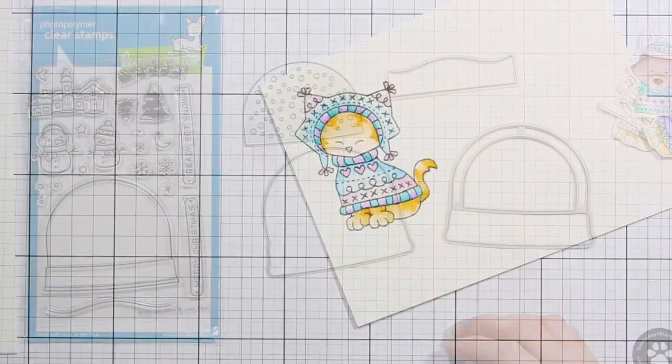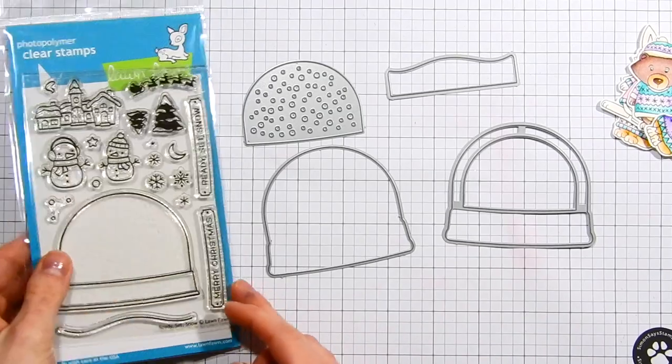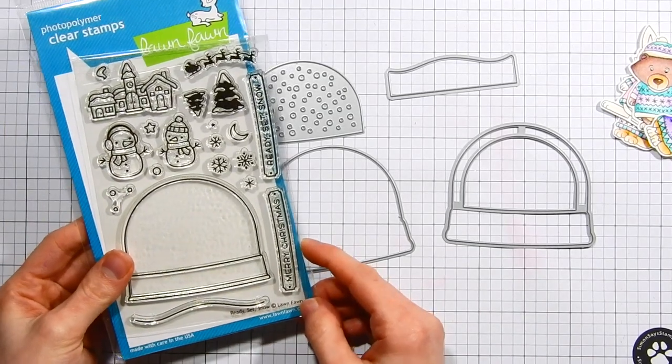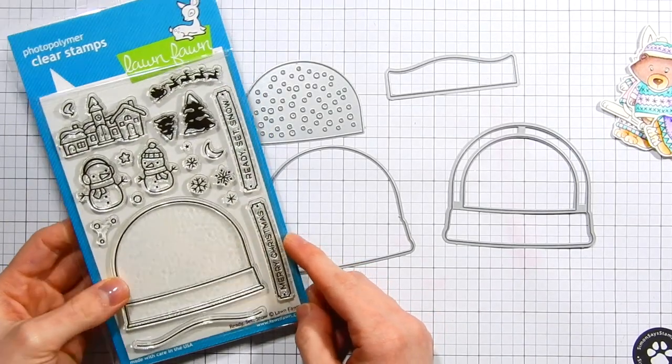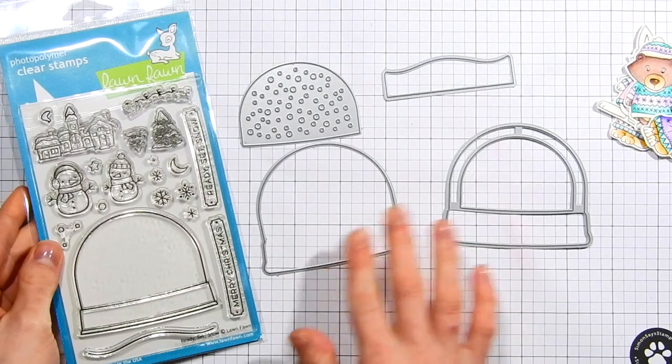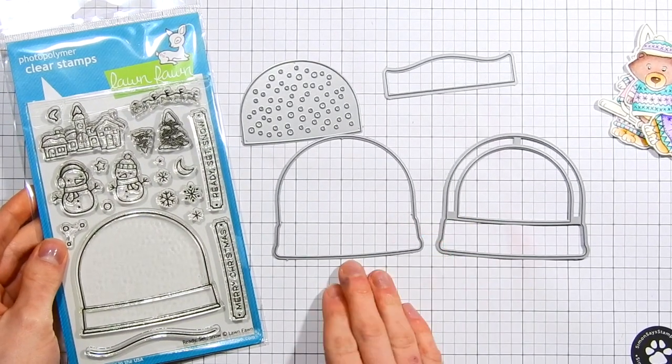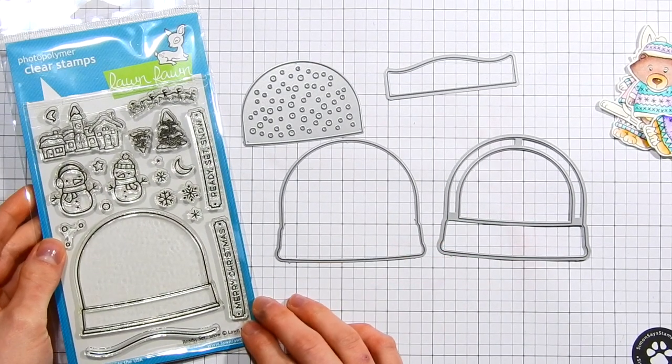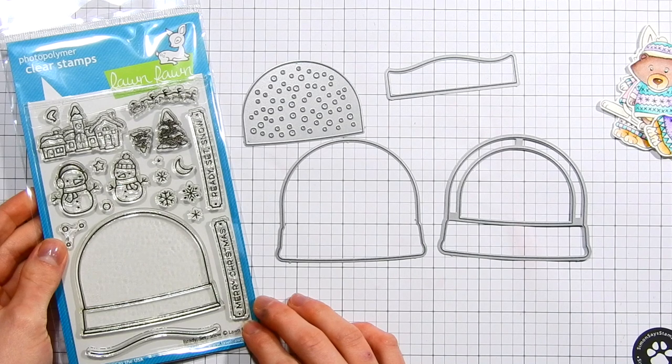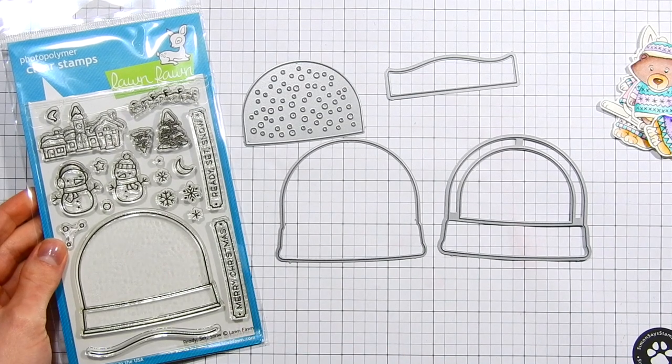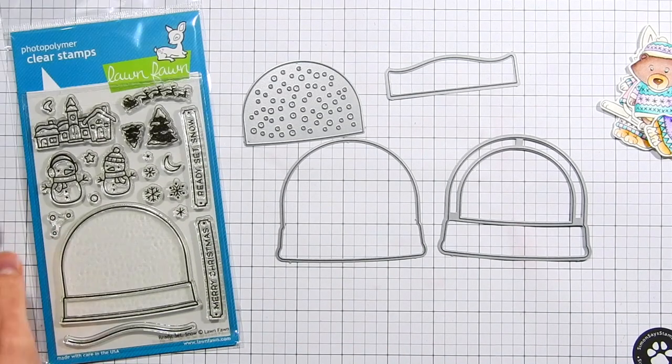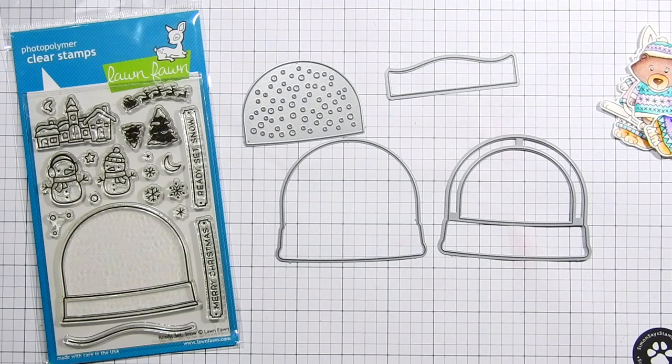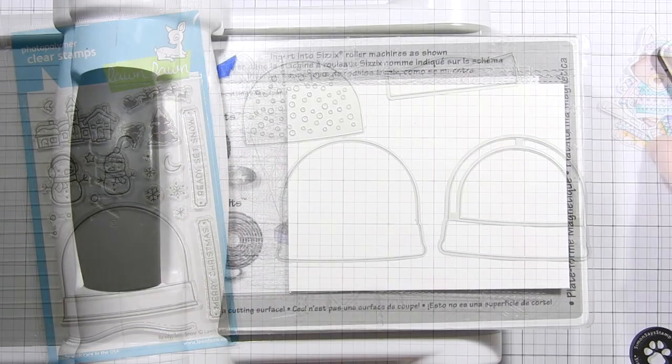Now I did fussy cut those images out with my fine tip scissors. I have them set aside there along the right and I've got the Ready Set Snow Stamp Set and also the Add-On Die Set from Lawn Fawn. I'm going to be using these to create my snow globe shaker that my Newton's Nook images will be sitting inside of. This is a perfect example of showing how stamps and dies from other companies can mix and match together to create really great and really fun cards.